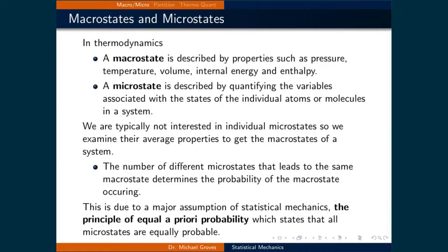One major assumption in statistical mechanics is the principle of equal a priori probability, which states that all microstates are equally probable. This means that the number of different microstates that are members of the same macrostate determines the probability of that macrostate occurring.